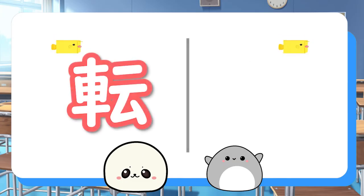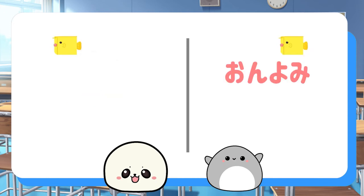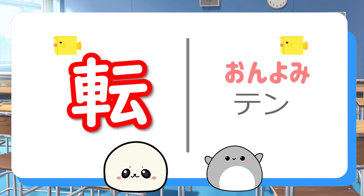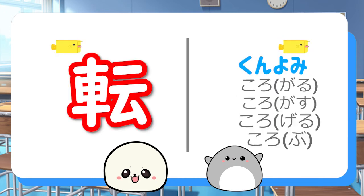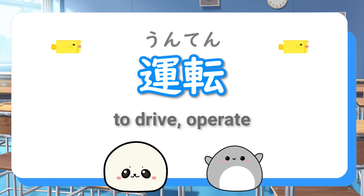How do we read this kanji? Onyomi is ten. Kunyomi is korogaru, korogasu, korogeru, korobu. An example word is unten.